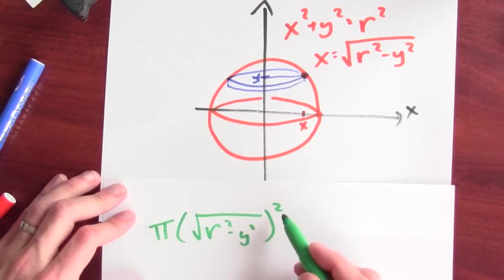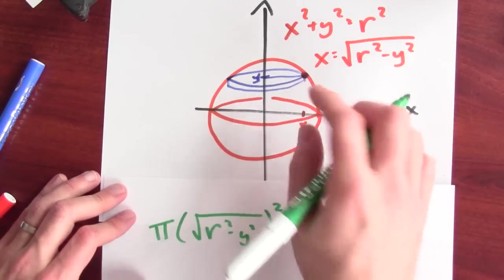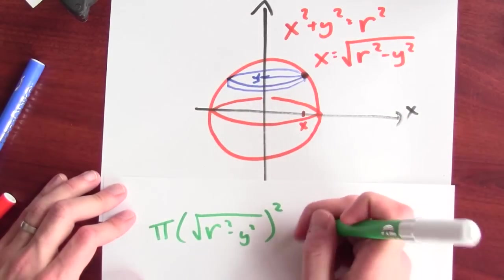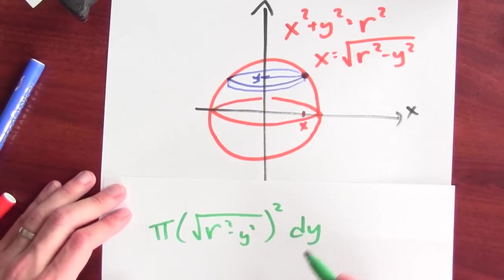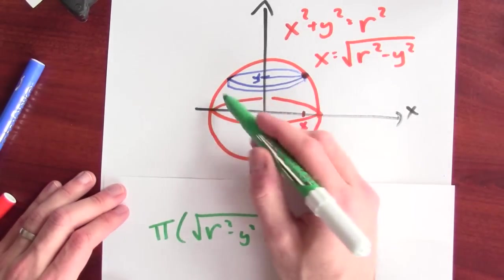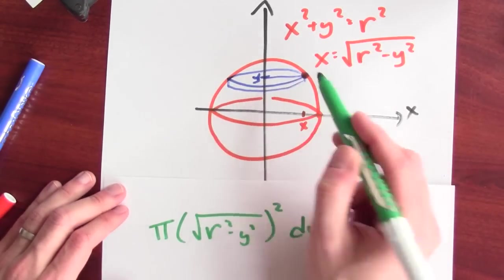This is pi radius of cylinder squared times the height of that cylinder. Well, the height of that cylinder is dy. So, this is giving me the volume of this thin cylinder.